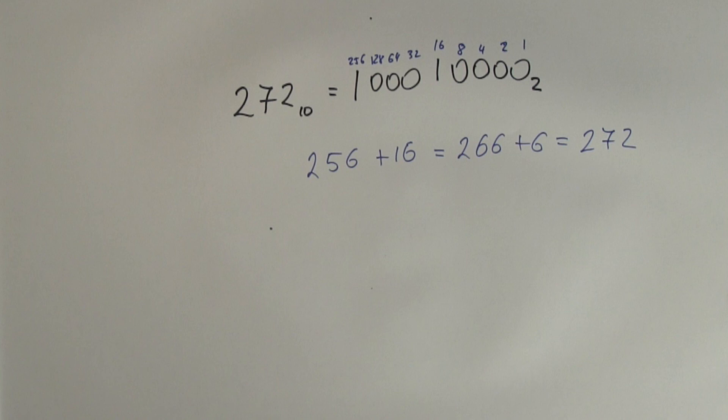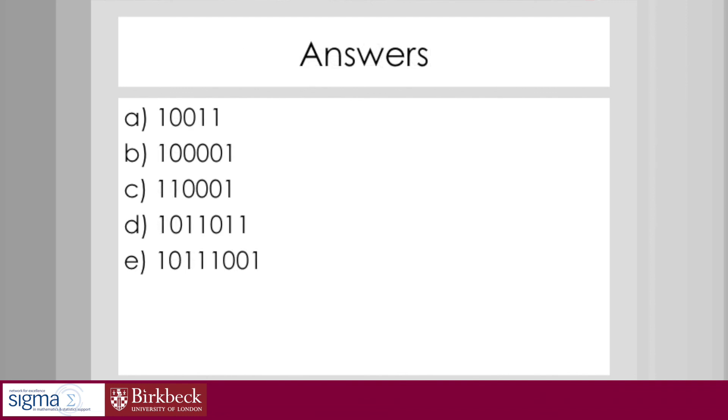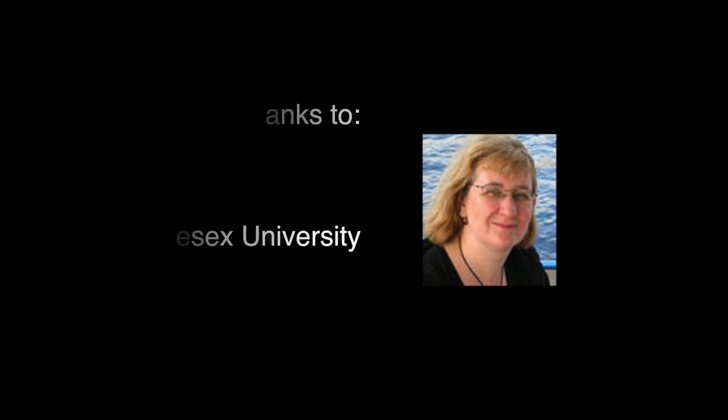So these were the examples to show you how to use the division method to convert decimal numbers to binary numbers. In the next few minutes I'm going to show you some extra practice questions that you can do yourself. And then I will show you the answers. I suggest that you pause the video while you're carrying out the calculations so your fun won't be spoiled. So these are the practice questions. And here are the answers.